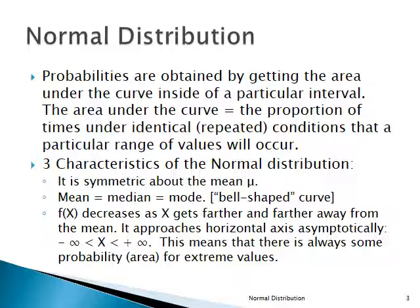The mode is the highest frequency, and the bell shape tells us that the highest frequency is at the mean. Another interesting characteristic is that as you get further and further out into the tails of the distribution, the curve approaches the horizontal axis asymptotically — it gets closer and closer but never actually meets. What that means is that there's always, at least in theory, some positive probability of getting extreme outlying values for a normally distributed random variable.